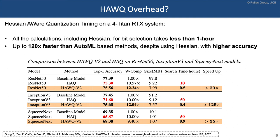For other neural networks such as Inceptionv3 or SqueezeNext, the difference is much larger. For Inceptionv3, the baseline is 77% and HAQ gets only 71% accuracy after 50 hours of search time. However, HAWQv2 — with no changes going from ResNet50 to Inceptionv3 — achieves 75.68% accuracy and only needs about 20-25 minutes end-to-end for the bit precision setting. The same applies for SqueezeNext, and it is faster when looking at end-to-end timing.